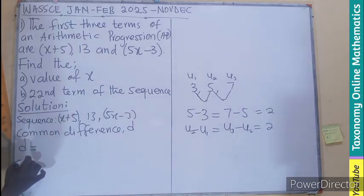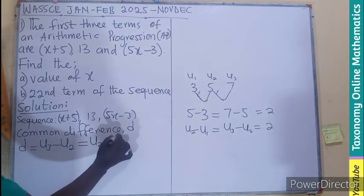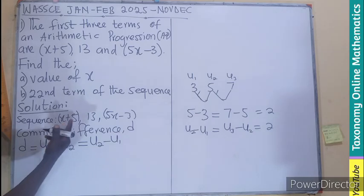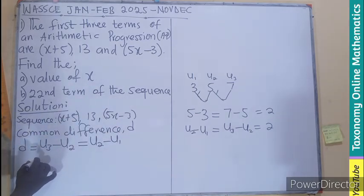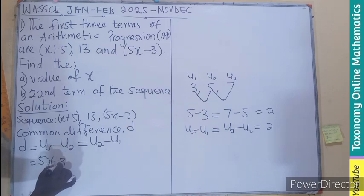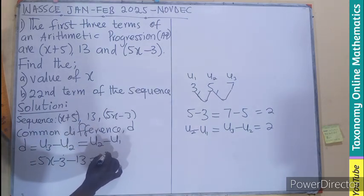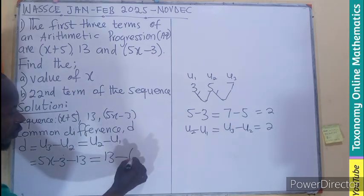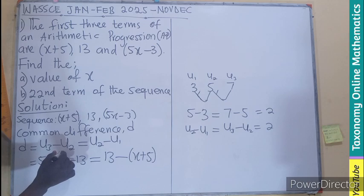These are the terms of the sequence. So we know to find the common difference, which is denoted by D. We know your D is going to be the third term minus the second term, which will be the same as the second term minus the first term. All right. Let me put this also in brackets.